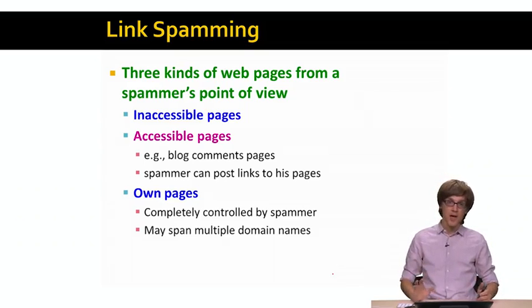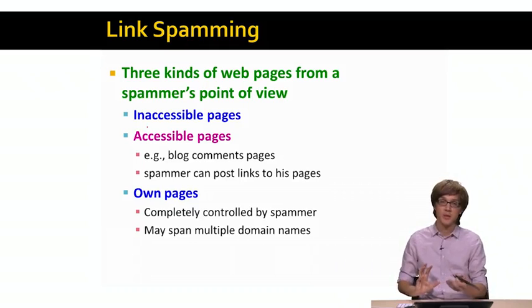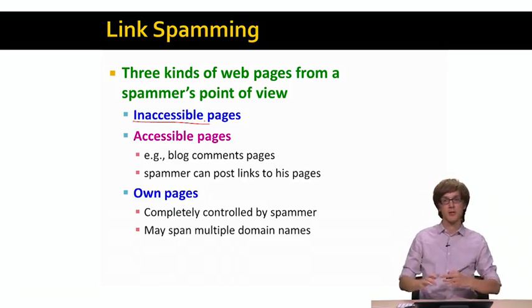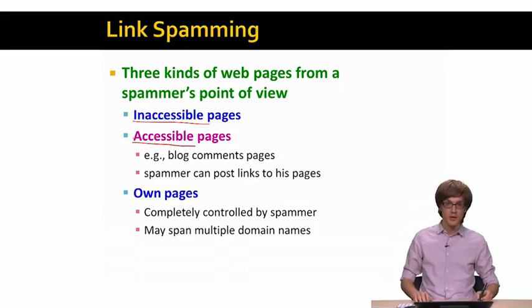Conceptually, we can take the web and split the web into three types of web pages based on the spammer's viewpoint. So for example, inaccessible web pages are basically pages that the spammer cannot touch. These are pages on the rest of the web that the spammer cannot touch. Then we have a notion of accessible pages. These are basically pages that the spammer can touch. So for example, spammer can add fake blog comments, spammer can add fake posts to various types of pages. And all these posts would kind of point to the target page.